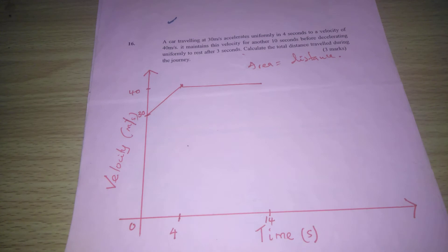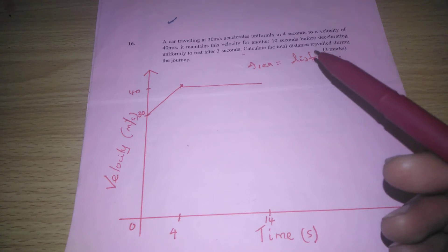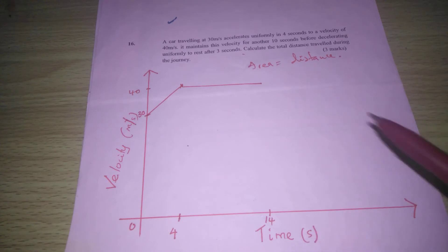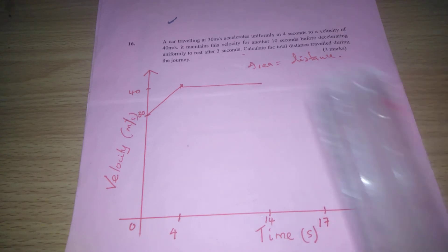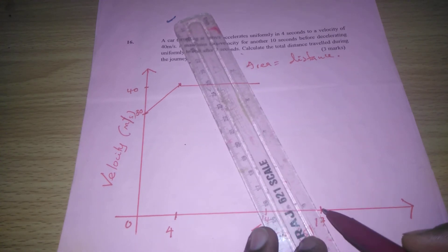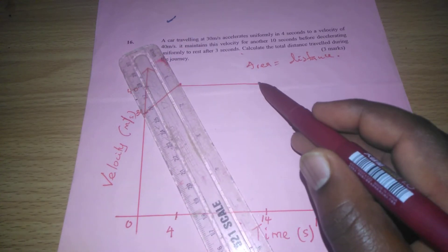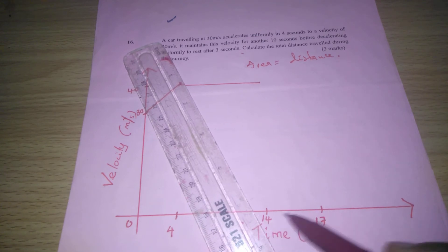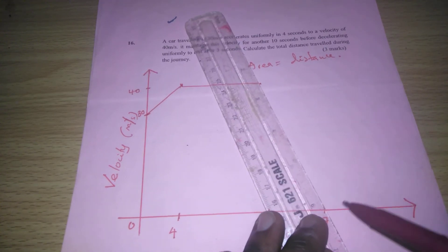After traveling uniformly at 40 meters per second, the car decelerates in 3 seconds. From 14 seconds, in 3 seconds, it will land us at 17 seconds. The velocity will be 0 after those 3 seconds. From 40 to 0 within 3 seconds. We sketch the motion again here.